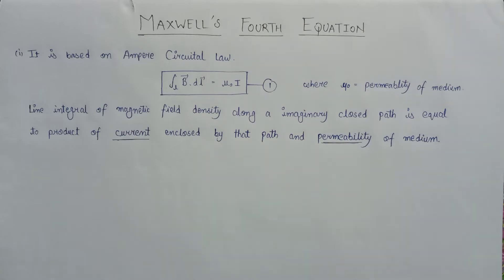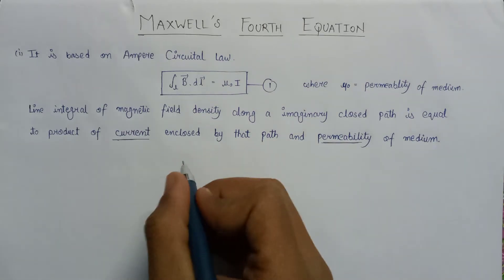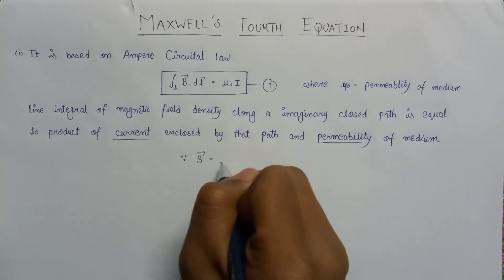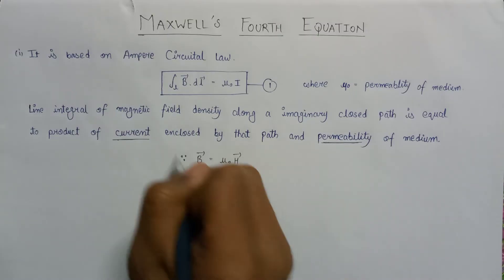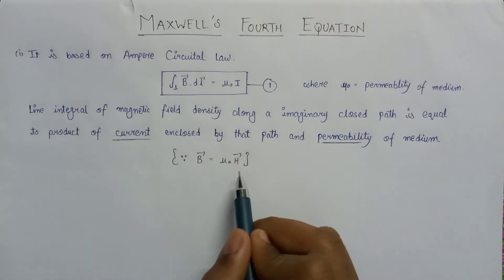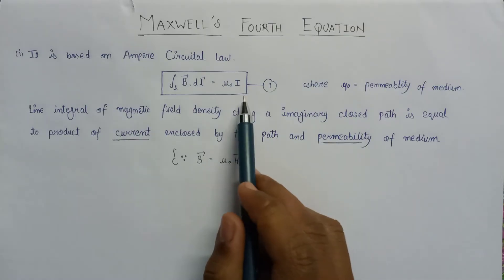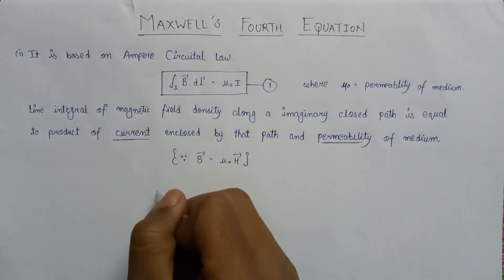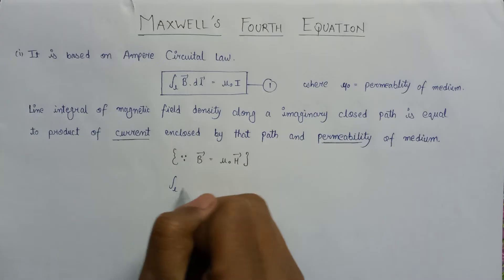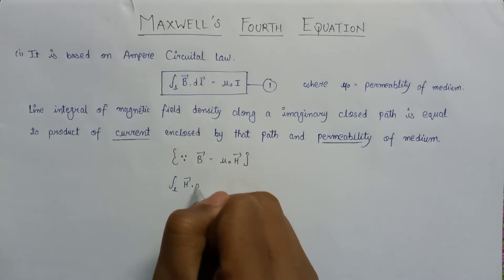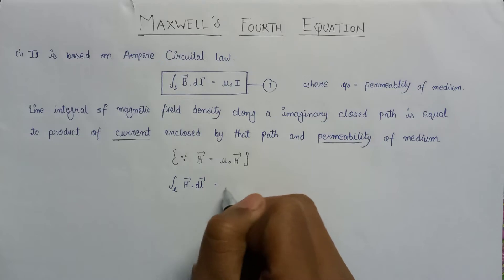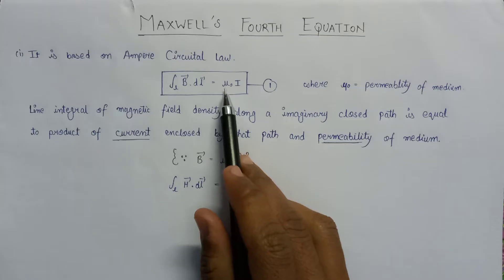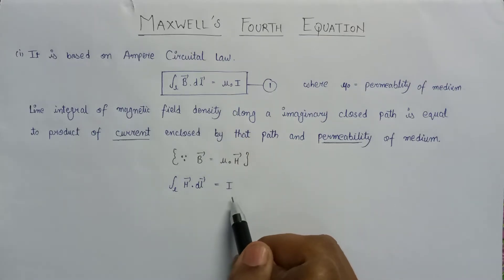We also know that B can be written as μ₀ times H. If we substitute the value of B in equation number 1, then equation 1 can be rewritten as: the line integral of H·dL equals I, because μ₀ cancels out, giving us this simplified expression.